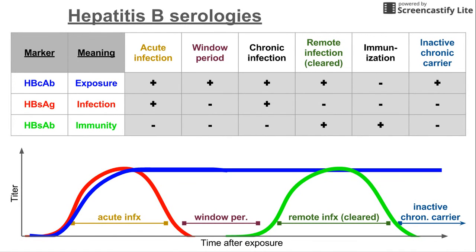Using these one-word descriptions — exposed, infected, and immune — for these three markers, it's easy to fill in the rest of the chart and answer any question that comes up regarding lab results when you're given the values for these three markers.